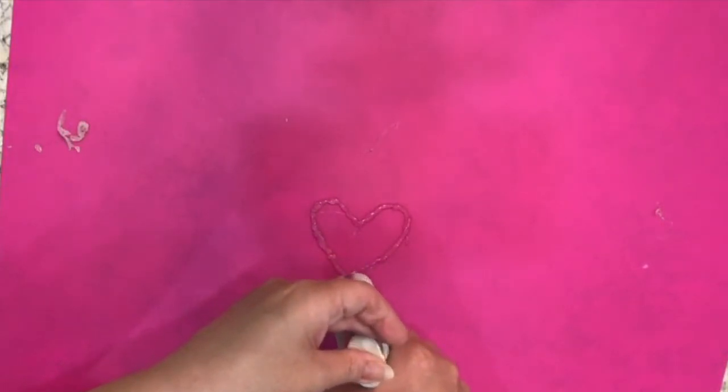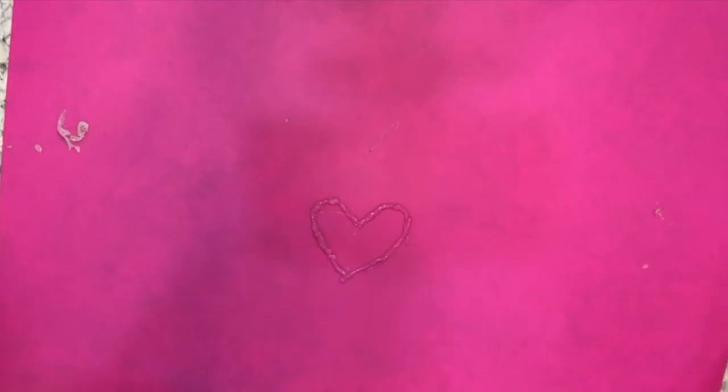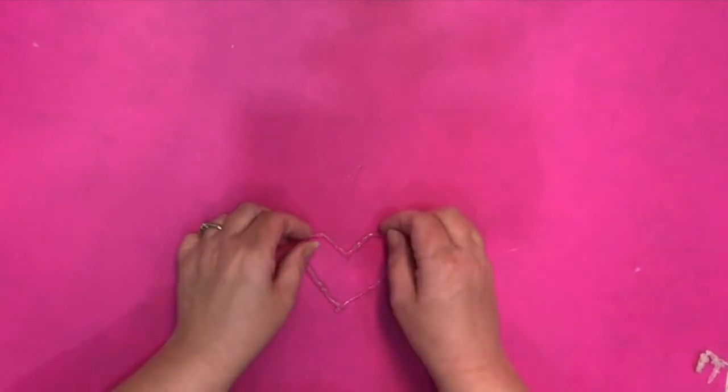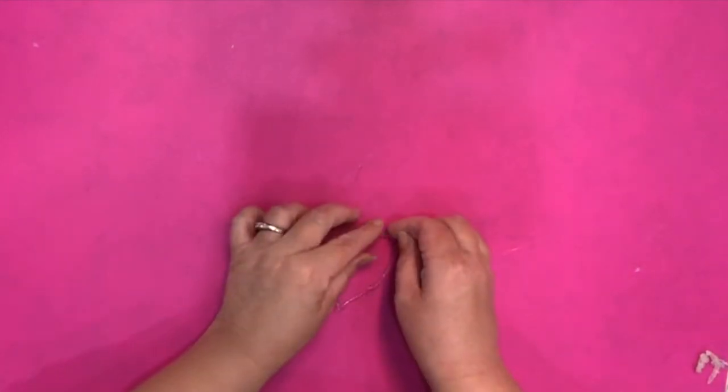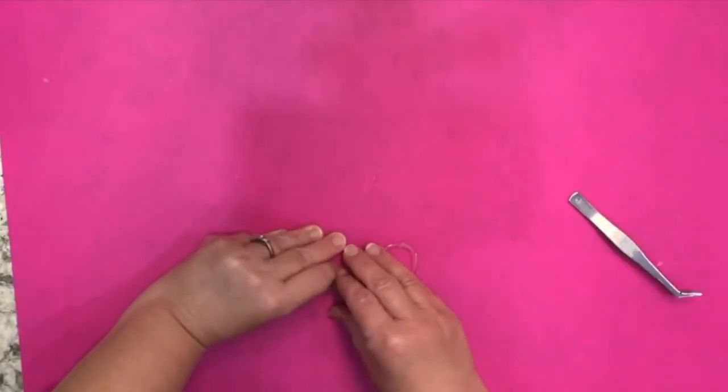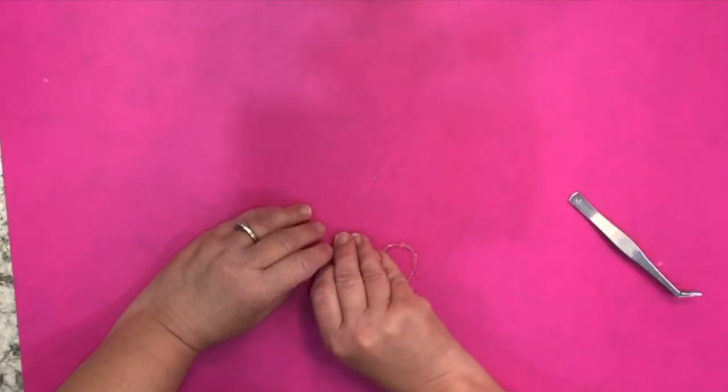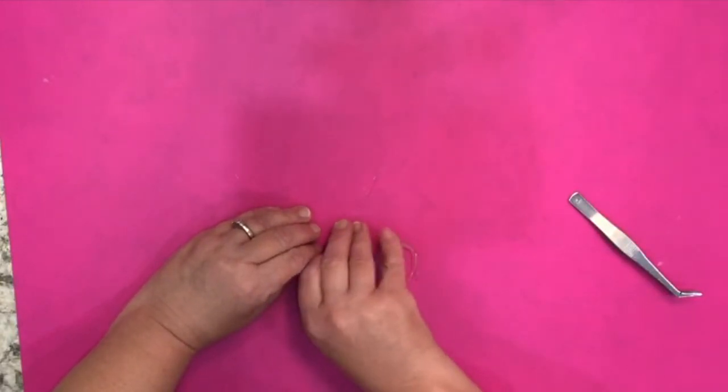The fun thing about this technique is that you can stop anytime and start again. The glue will not be a straight edge unless you shape it afterwards with some scissors. Let it cool down completely and then remove it from the non-stick surface.